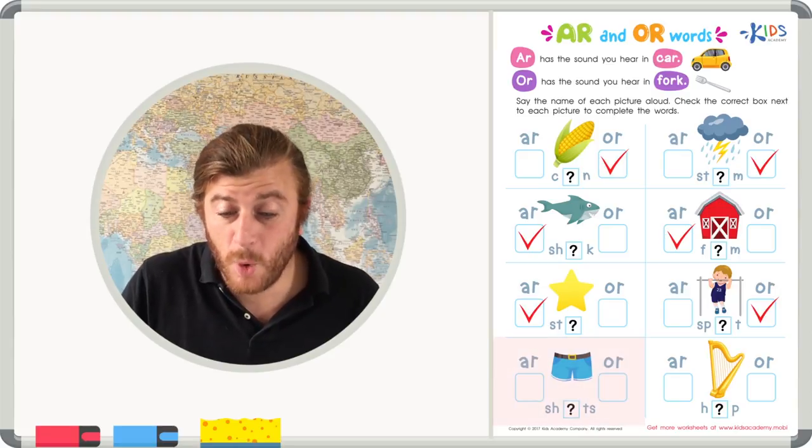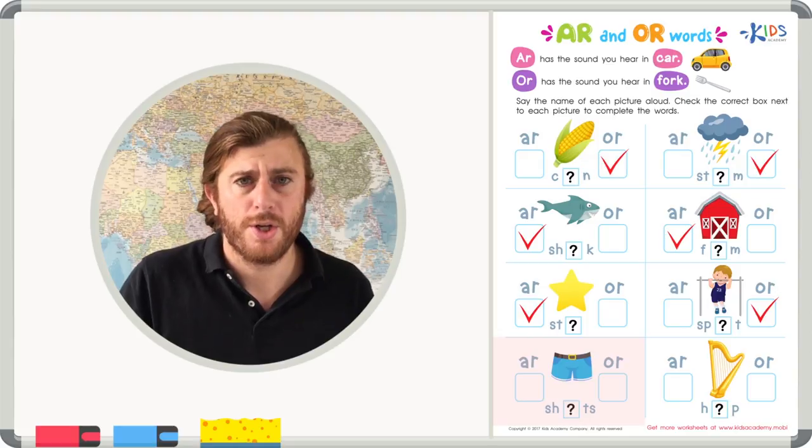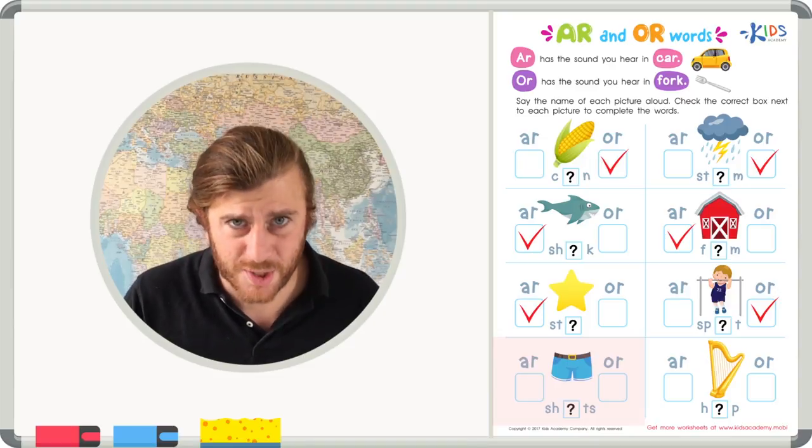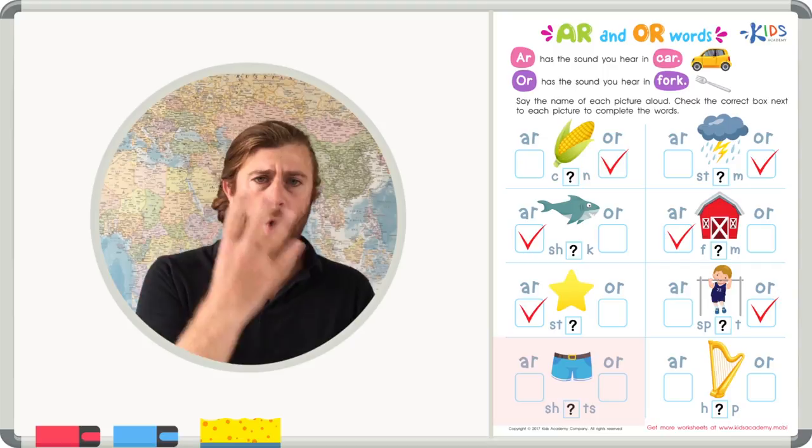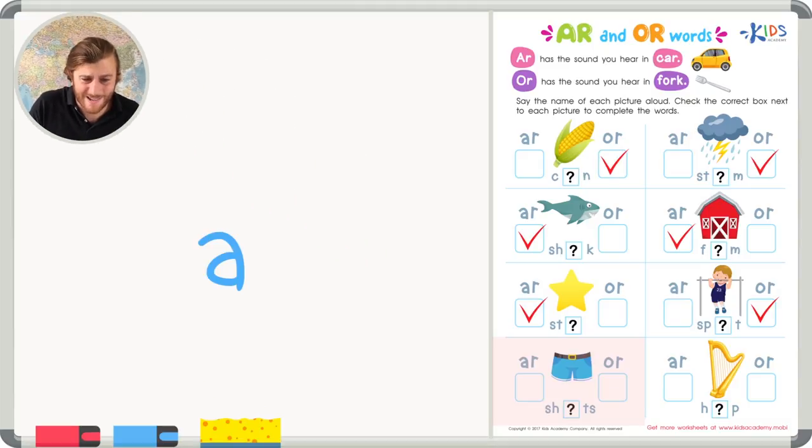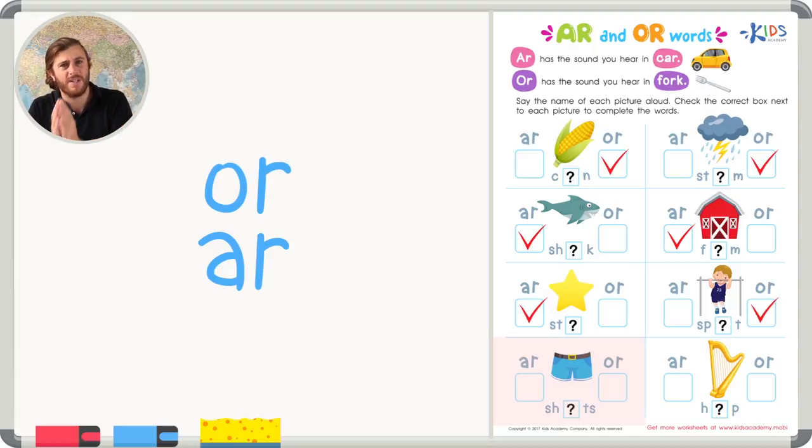Our next picture, we have a blue pair of shorts. Sh-o-r-t-s. Shorts. Which sound did you hear? Did you hear A-R or did you hear O-R when I broke up that word into different sounds? What did you hear? I heard O-R, but let's try one more time just to be sure. Sh-a-a-arts or sh-o-o-orts. I heard the O-R sound for shorts.